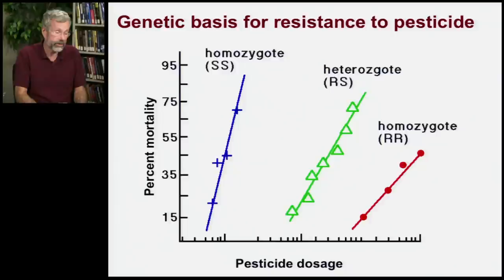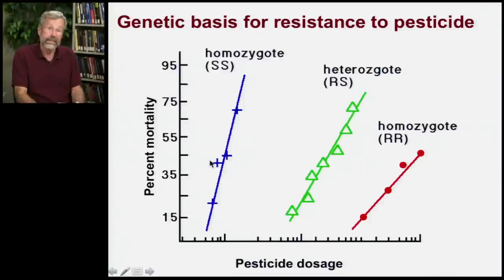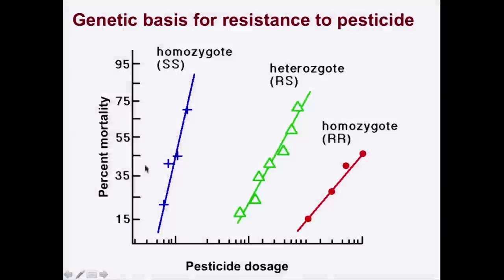Here we have what was going on with the early days of DDT in terms of trying to control insects. This is the dosage of DDT that would be administered on a field or on a crop, and then this is the percentage of insects exposed to that dosage that would die.